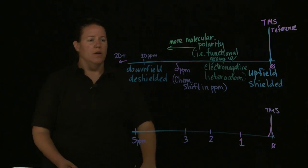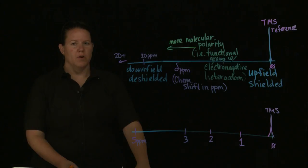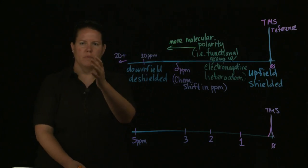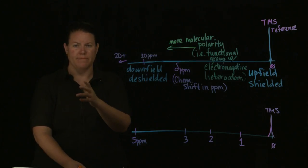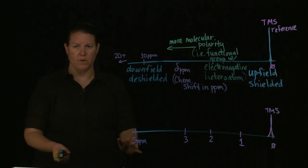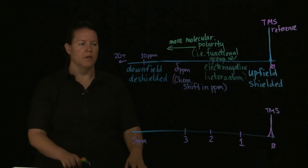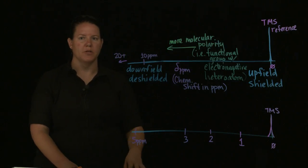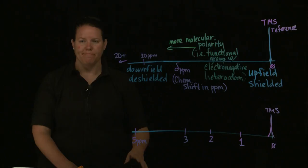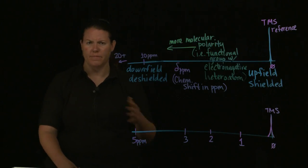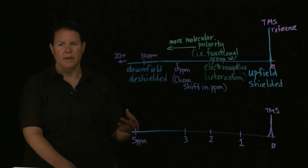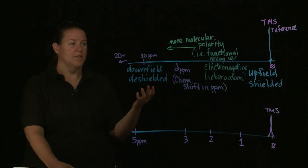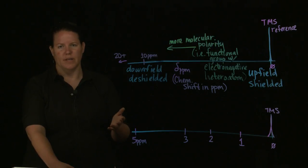Usually we're going to find most of our peaks between zero and ten. The proton NMR can go to like 30 or 40 — a totally different scale than carbon-13, which goes into the hundreds — but the bottom part is about the same. This is measuring chemical shift in parts per million, and there's a formula for figuring out chemical shift, but it basically deals with frequencies and whether things are shielded or deshielded.